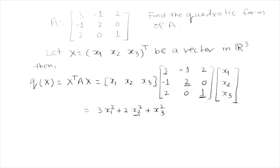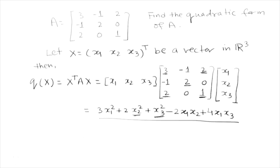The diagonal entry of the first row gives the coefficient of x1², the second row diagonal entry gives the coefficient of x2², and the third row diagonal entry gives the coefficient of x3². The off-diagonal terms contribute: -x1 x2 and -x2 x1 from the (-1) entries give -2x1 x2; and 2x1 x3 and 2x3 x1 from the (2) entries give +4x1 x3; the coefficient of x2 x3 is 0. So the required quadratic form of the given matrix is 3x1² + 2x2² + x3² - 2x1 x2 + 4x1 x3.